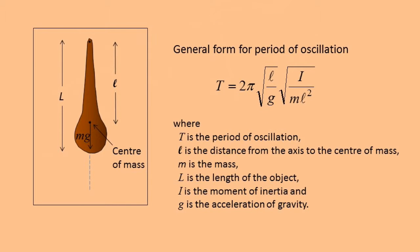If the shape is complex, such as this club, the period depends on its moment of inertia about the point of suspension. This is why the shape of a baseball bat or golf club is important to the way it feels to the player.